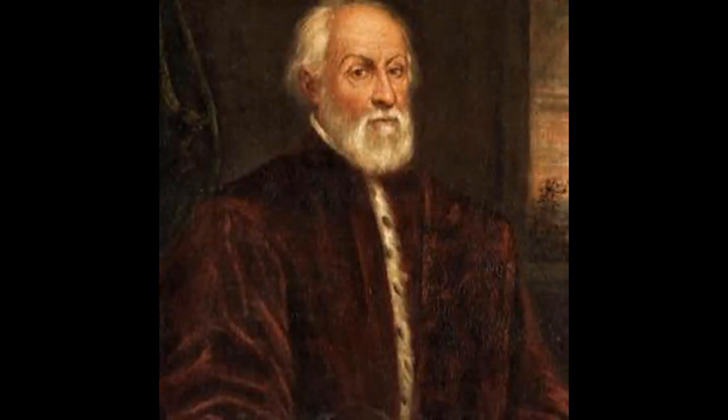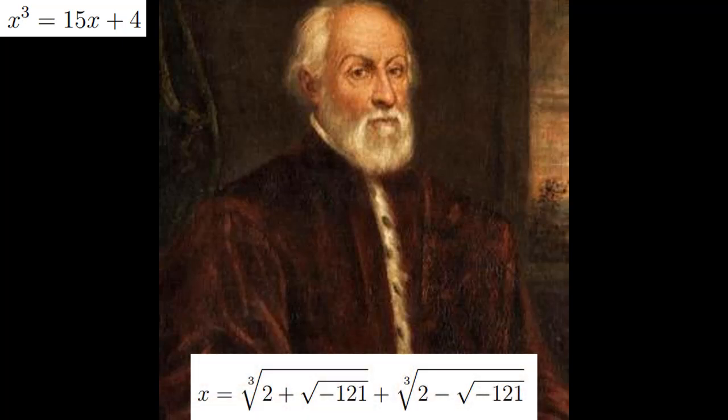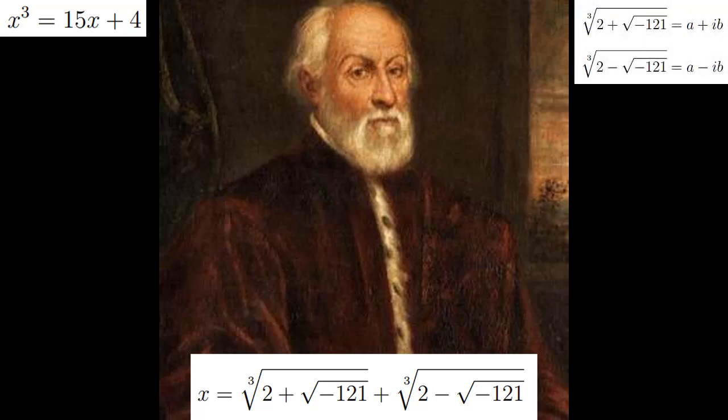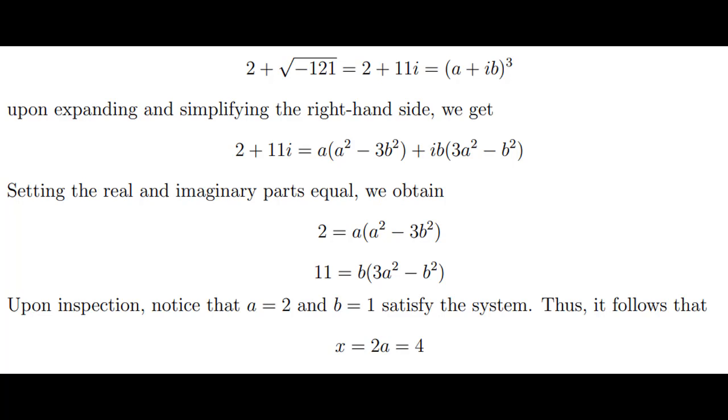In 1572, Bombelli wrote the work Algebra and addressed this occurrence using x to the third equal to 15x plus 4 as his example. This equation yields all real roots, x equals 4 and x equals negative 2 plus or minus the square root of 3. When using Cardano's formula, one ends up with the sum of complex conjugates, which ultimately sum to 4. Bombelli's brilliant insight led him to deal with a system of equations, setting each cube root equal to a plus ib and a minus ib respectively, where a and b are real numbers. From this deduction that each imaginary part would cancel out, and one would be left with only x equals 2a upon summing, this allowed him to focus on just the cube of a plus ib, ultimately yielding a equals 2, and thus x equals 4.